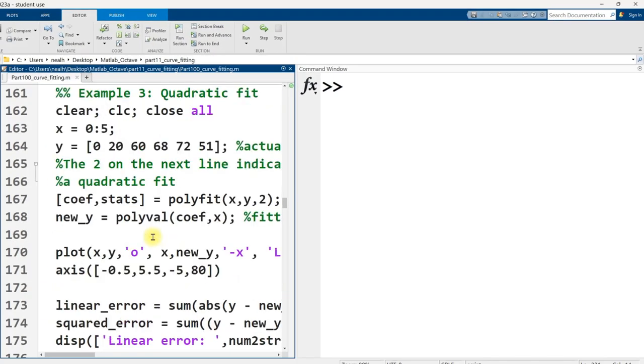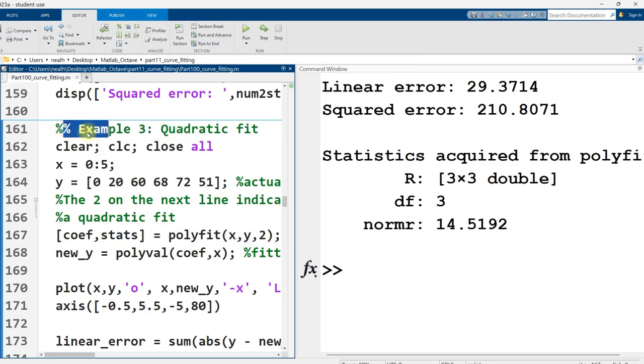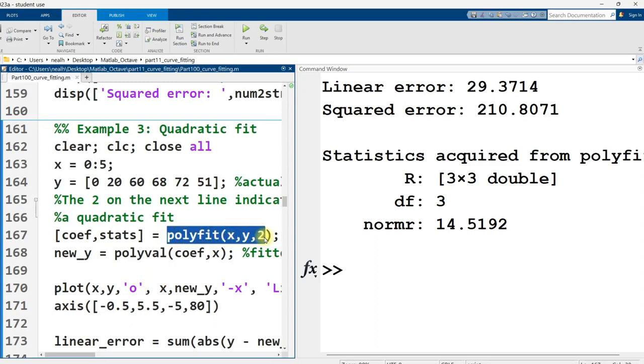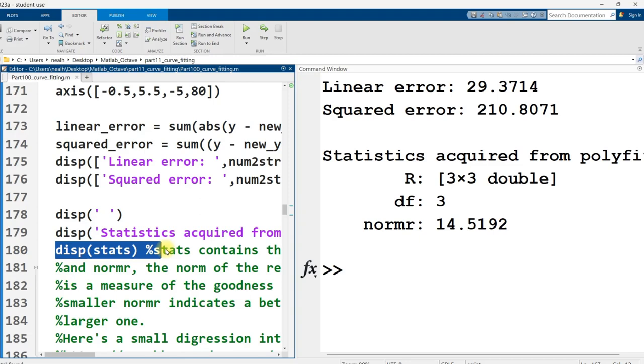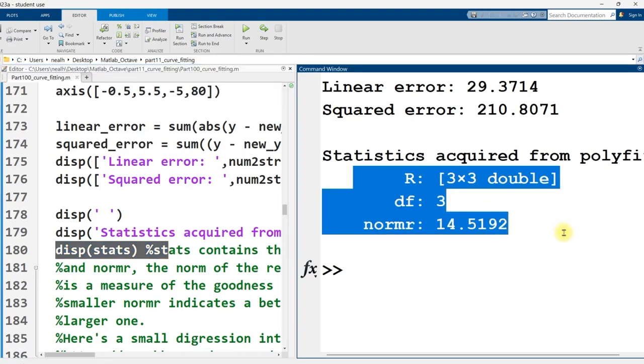Scrolling back up to some of the stuff I skipped there. In example three here, we're on line after 160 in the code. One of the new things that I did is from polyfit - it wasn't just that I used a quadratic, the number two here, but I also set two variables in square brackets equal to the result of polyfit. I grabbed not only the coefficients, but this variable that I named stats. And I named it that because it's going to be a collection of statistics.